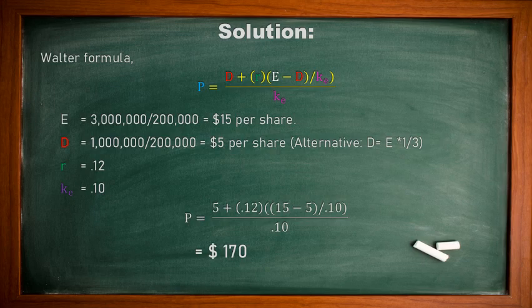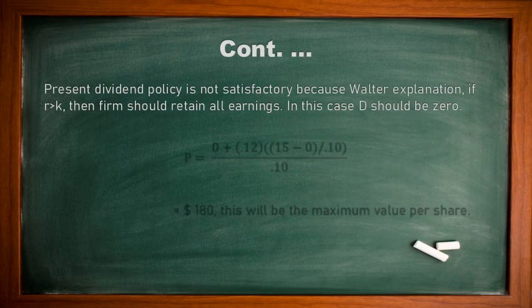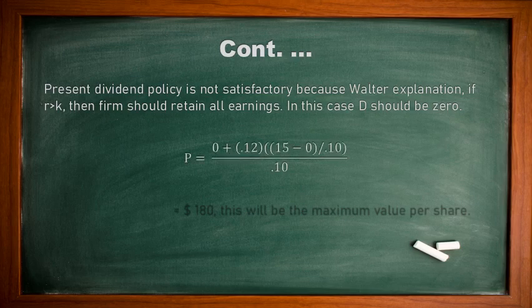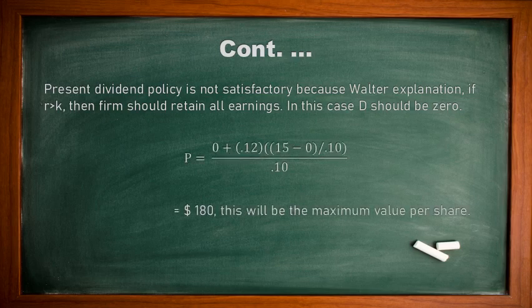Is $170 the maximum value? Since R (12%) is greater than K (10%), Walter says the firm should not pay any dividend. Here the firm is paying one-third of earnings as dividend, so this is not the maximum value. Setting D = 0 and driving the formula again gives a maximum share price of $180, not $170. The present dividend policy is not satisfactory; the firm should retain all earnings.